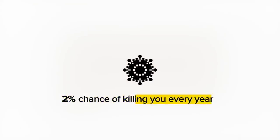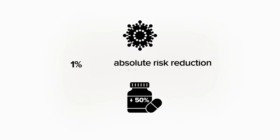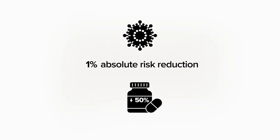For example, say there's some disease that has a 2% chance of killing you every year, but there's some drug that cuts your risk 50%. That sounds amazing, but then you realize that at the end of the year your risk will only have fallen from 2% down to 1%. So the absolute reduction of your risk is only 1%. If 100 people were treated with the drug, instead of 2 people dying, one person would die, so you'd have to treat 100 people to save one life — a 99% chance that taking the drug all year will have no effect on you. To say the drug cuts your risk of dying by 50% seems like you're overstating things.